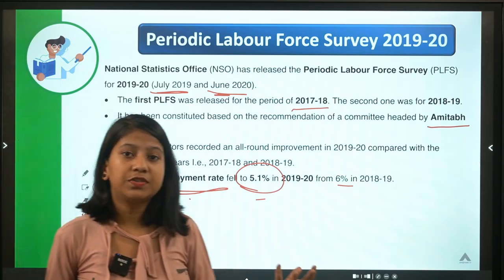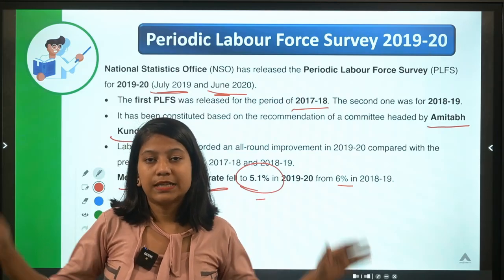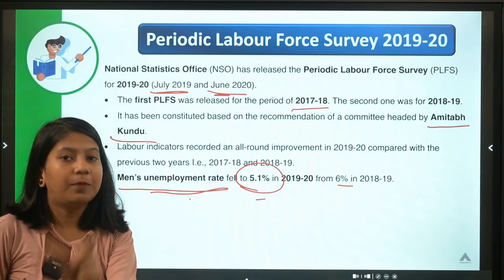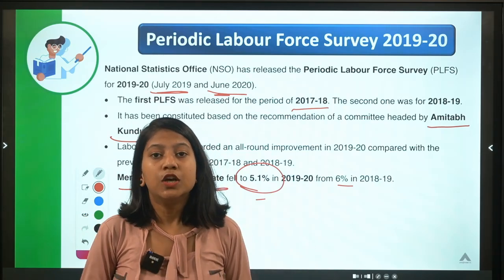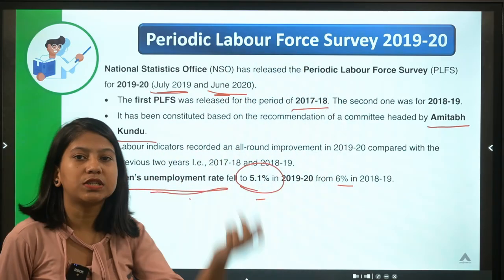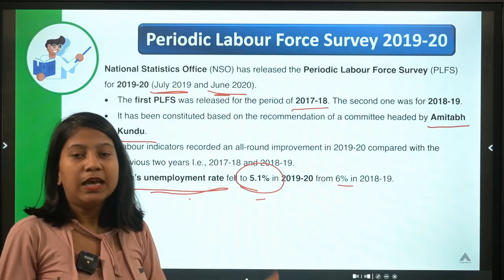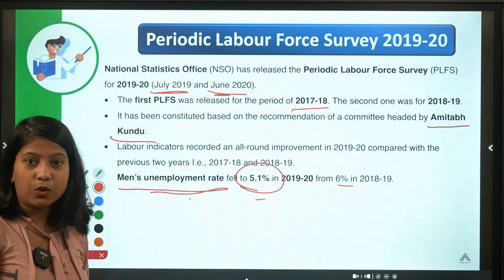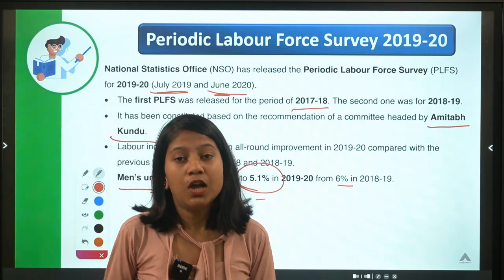One positive thing about this PLFS for 2019–20 is that all unemployment rates have fallen — whether men's or women's. Labour participation rate has increased and workforce participation rate has increased, so this is basically a positive survey. However, this positivity is mitigated by the fact that unemployment has been rising due to COVID, so we'll see what the PLFS for 2020–21 shows when it is released.